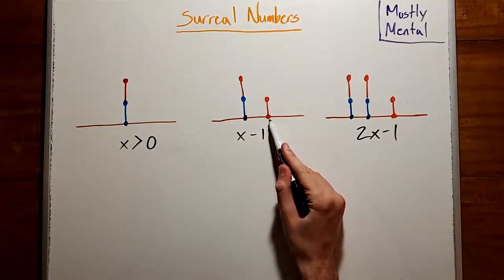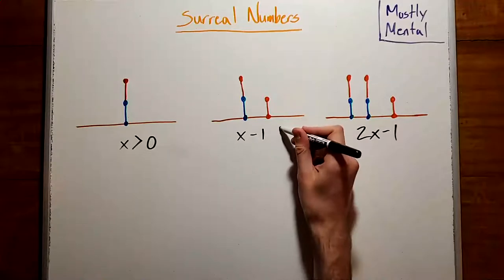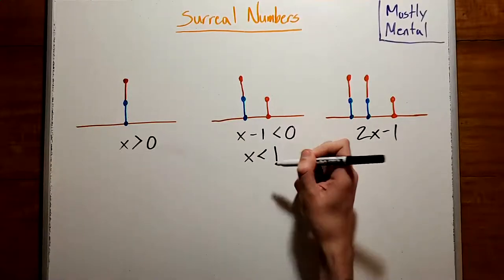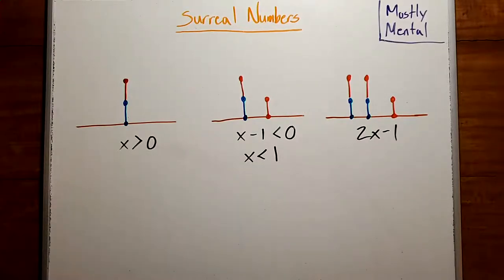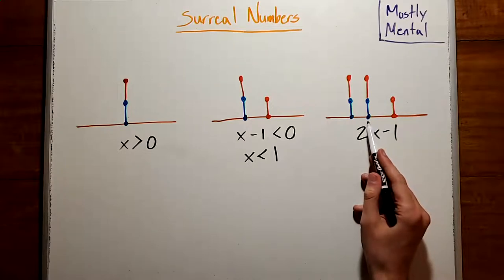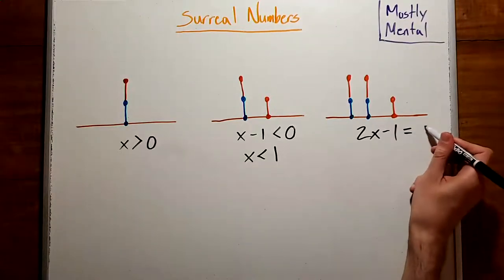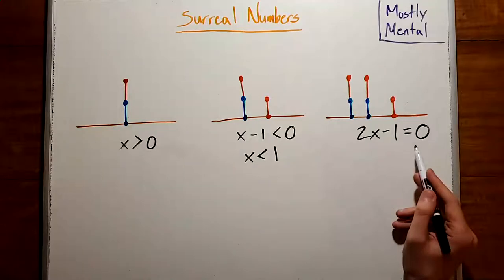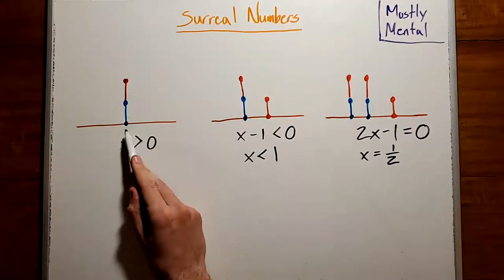On the other hand, if we add a red edge, that is, we subtract 1 from the value, now you can check that red can guarantee the win. And so this position must have value less than 0, which means x must be less than 1. And since it's positive and less than 1, a natural guess is that it has value 1 half. And sure enough, if we put two copies of this position together with one red edge, that is, we take the value 2x minus 1, you can check that whoever goes first loses, which means this position has value 0. And solving, that tells us that x has value 1 half. So this position is worth half an edge.